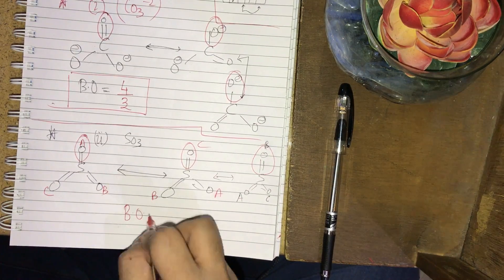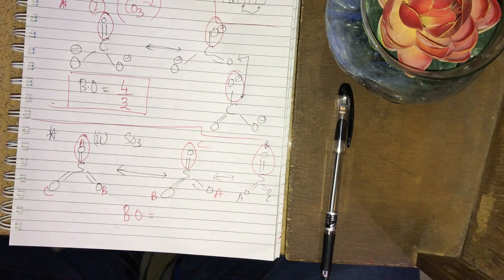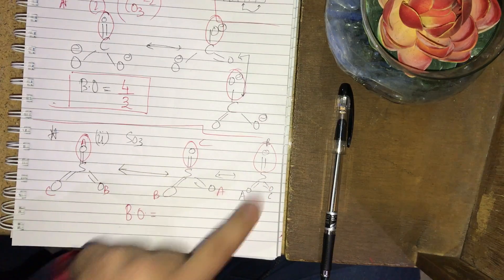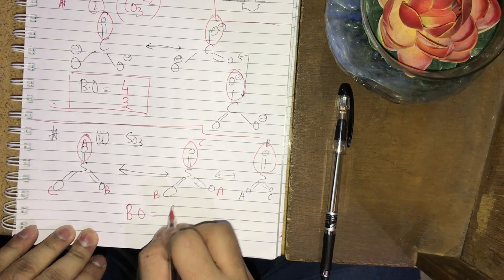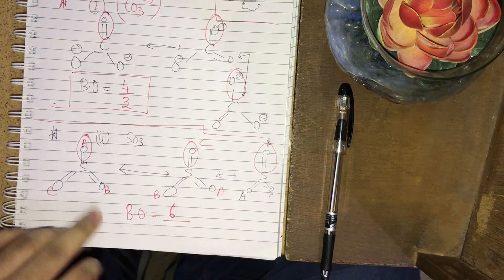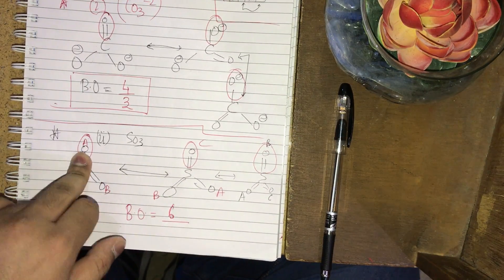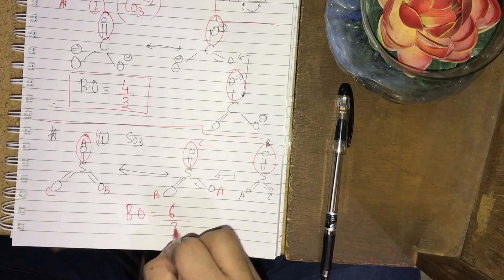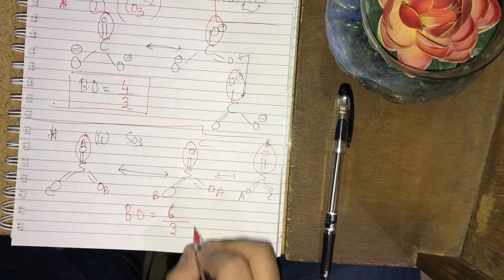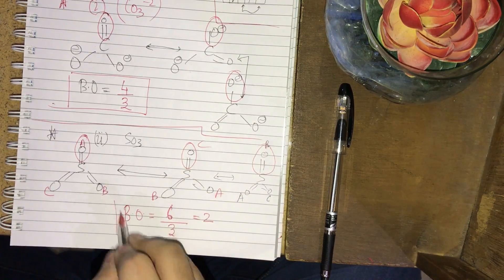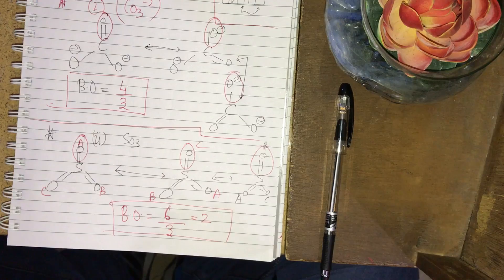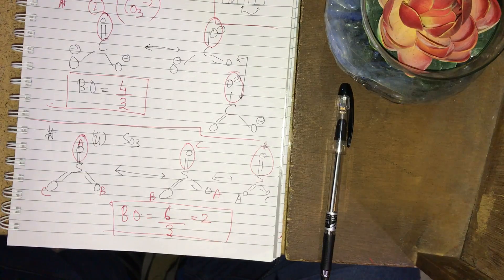Calculating the bond order: the fixed bond contributes 2 + 1 + 1 = 4 bond counts across three structures, giving a bond order of 4/3 — wait, actually summing gives 2 + 2 = 4 divided by... across three structures the bond order comes out to 2. So the bond order for SO₃ is 2.